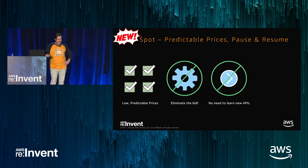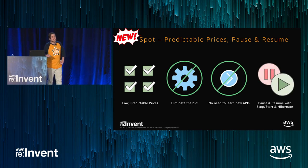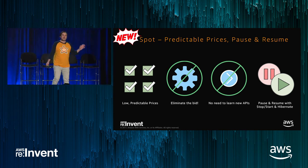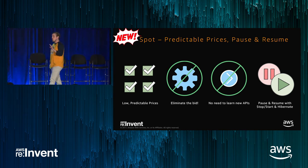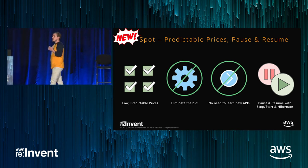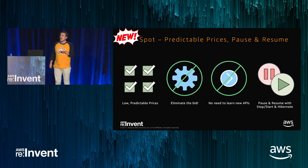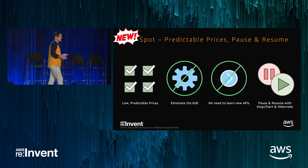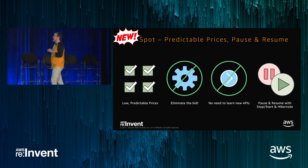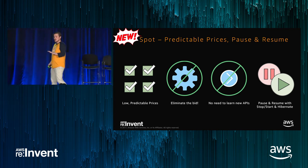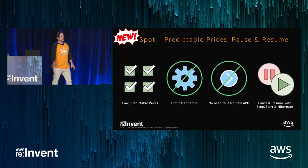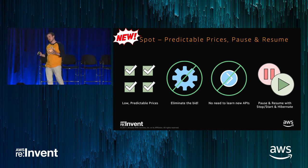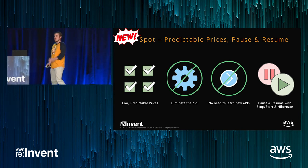The fourth thing we announced, which is an industry first, is the ability to actually hibernate your Spot instance. You can now say when you launch your instance, 'Instead of terminating me, I want you to hibernate me.' When we need to reclaim that capacity, we'll flush your in-memory state to disk, and when capacity is available again, it'll just turn back on — just like opening and closing your laptop. It's available via RunInstances, Spot Fleet, and Request Spot Instances. And just so Spot users know: all of this is perfectly backwards compatible. You don't need to make any changes to how you've been using Spot.